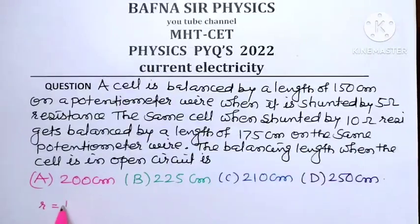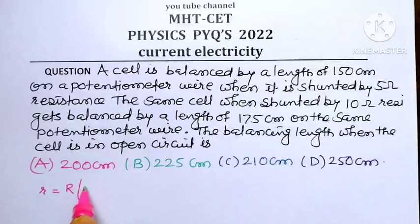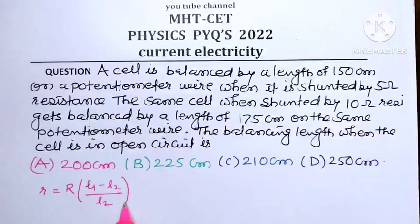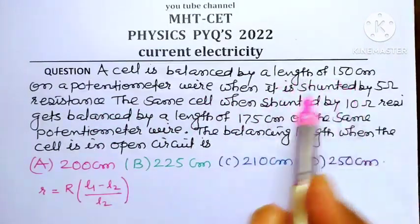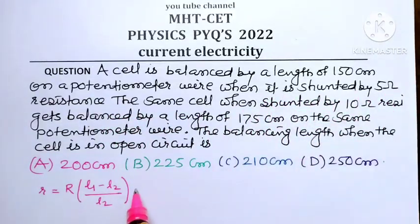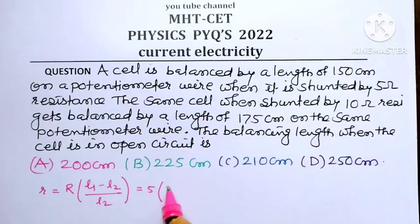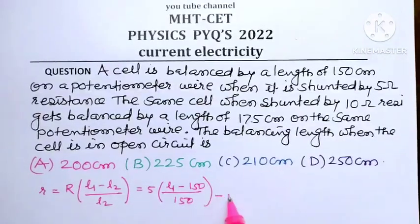What is the formula for internal resistance of potentiometer wire? Small r equals capital R in bracket L1 minus L2 divided by L2, where L2 is the balancing length when a shunt resistance is connected. For the first case, the balancing length is 150 cm when it is shunted by 5 ohm. So r equals 5 in bracket L1 minus 150 divided by 150, and this is equation number 1.